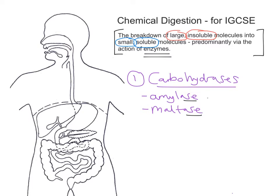There are two types of amylase: salivary amylase and pancreatic amylase. Salivary amylase is secreted by the salivary glands and works in the mouth. Pancreatic amylase is released by the pancreas and works in the upper part of the small intestine. In both instances, the job of amylase is to break starch — a large carbohydrate — down into maltose sugar, which is a smaller sugar.